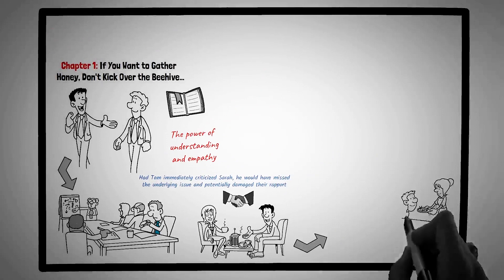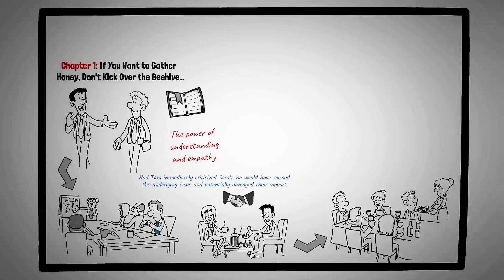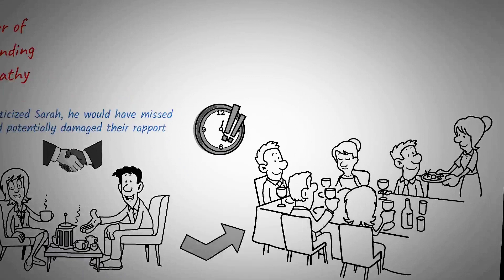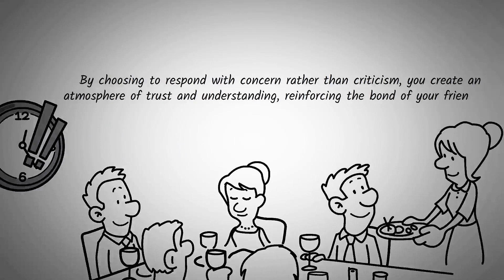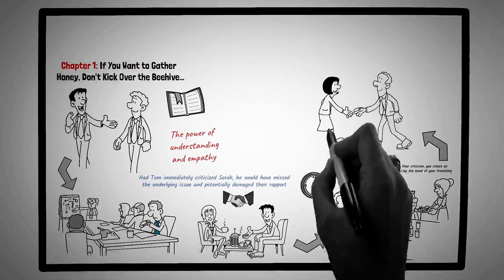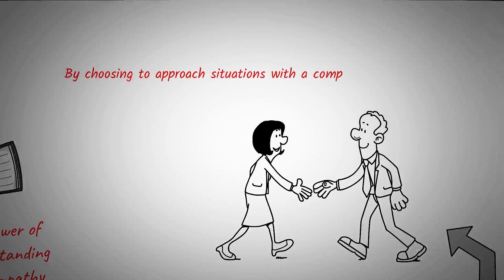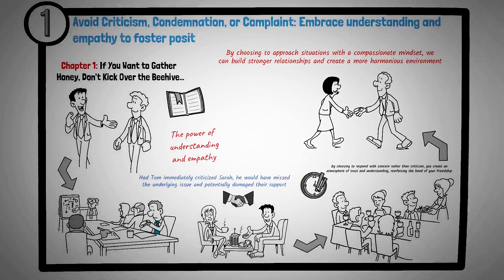Imagine you've organized a dinner at your place, and one of your friends arrived significantly late without prior notice. Instead of greeting them with a complaint or a sarcastic remark, take a moment to genuinely ask if everything is okay. You might discover they had an unexpected work emergency or a personal challenge they were navigating. By choosing to respond with concern rather than criticism, you create an atmosphere of trust and understanding, reinforcing the bond of your friendship. The essence of this chapter is not just about avoiding criticism, but about fostering understanding and empathy in our interactions. By choosing to approach situations with a compassionate mindset, we can build stronger relationships and create a more harmonious environment. Principle number one is avoid criticism, condemnation, or complaint. Embrace understanding and empathy to foster positive interactions.